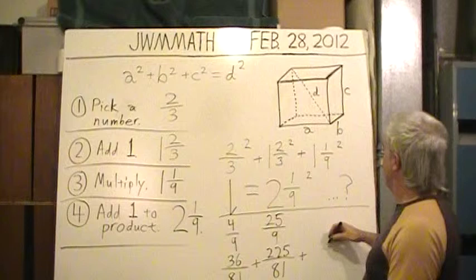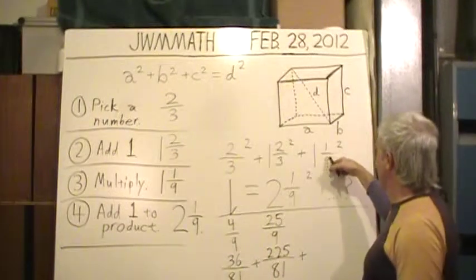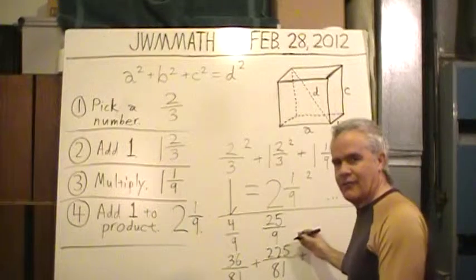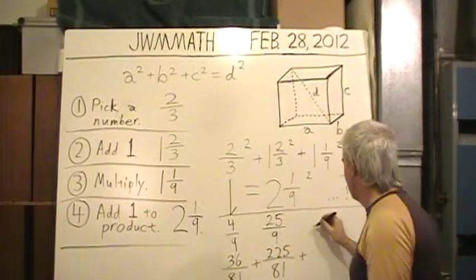One more fraction to add on. One and one-ninth squared. That is equal, let's see, that's ten-ninths. Ten-ninths times itself is one-hundred over eighty-one.